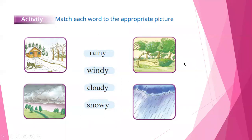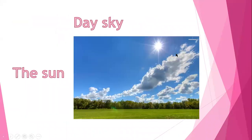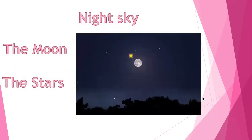Now let's talk about the day sky. What's the meaning of day sky? The day sky has the sun. The sun is in the day sky. And the moon and the stars are in the night sky.